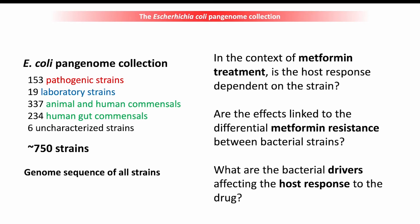What we want to do is use this workflow to test the effects of our large E. coli pangenome strains with C. elegans in the context of metformin treatment. We have approximately 750 strains ready to be used in the lab. This collection contains different types of phenotypes, from pathogens to commensals to lab strains. Importantly, we also have the genome sequence of every strain. The strains also have different origins — we have animal commensals and human commensals. We want to address different questions: is the host response dependent on the strain? Are the effects linked to differential metformin resistance between bacterial strains? And what are the bacterial drivers affecting the host response to the drug?